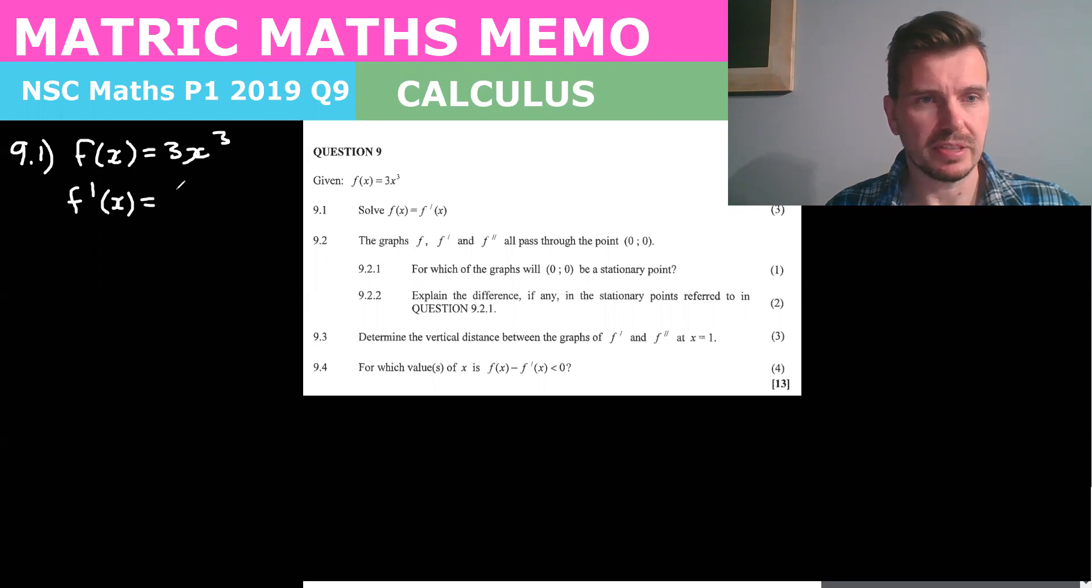So 3 times 3 is 9 and then we take one off the exponent, it becomes x squared. If you're not sure how I did that just check out the calculus video with explanations on how to do the basic differentiation rule.